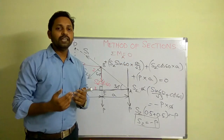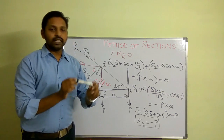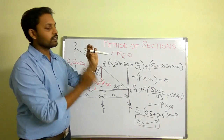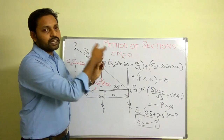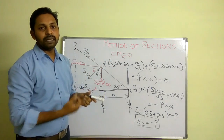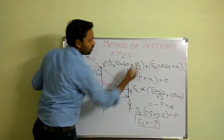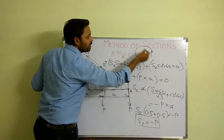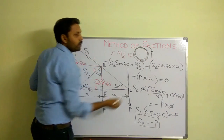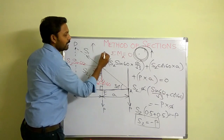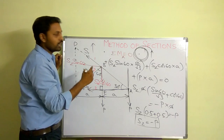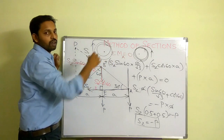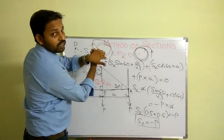To determine whether a moment is clockwise or anticlockwise, there are two techniques. First, fix the moment center and apply the force at its point of application — observe whether it rotates clockwise or anticlockwise. Second, if the moment center is on the left and the force application point is on the right, encircle the moment center in the direction of the force — if this is done anticlockwise it is positive, if clockwise it is negative.